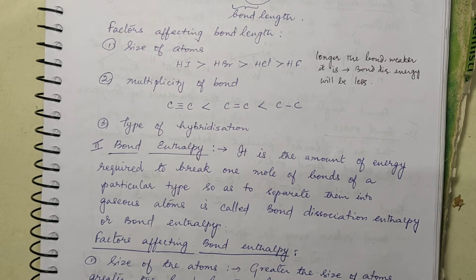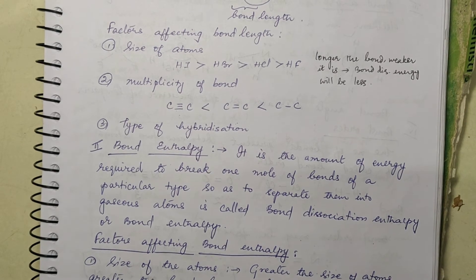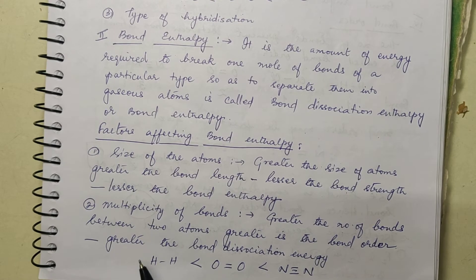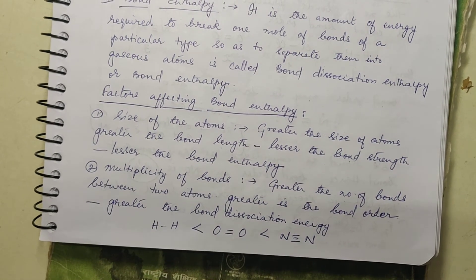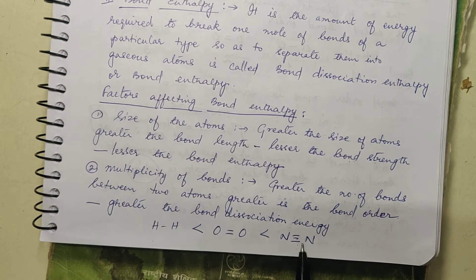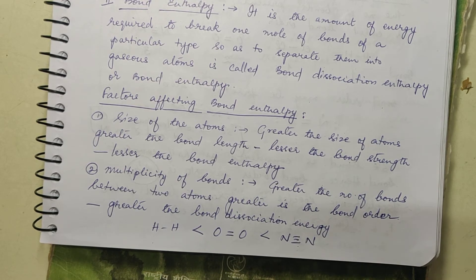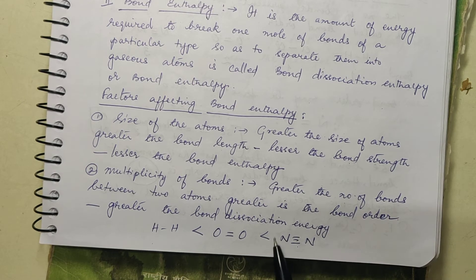The second factor is multiplicity of bonds. Greater the number of bonds between any two atoms, greater the bond order — bond order is nothing but the number of bonds between any two atoms. Greater the bond order, greater the bond dissociation enthalpy. So you find here: single bond, double bond, triple bond — the triple bond is associated with the highest bond dissociation energy. For nitrogen, the bond dissociation enthalpy is the highest. This is one reason why nitrogen is inactive — because of its high bond dissociation enthalpy.